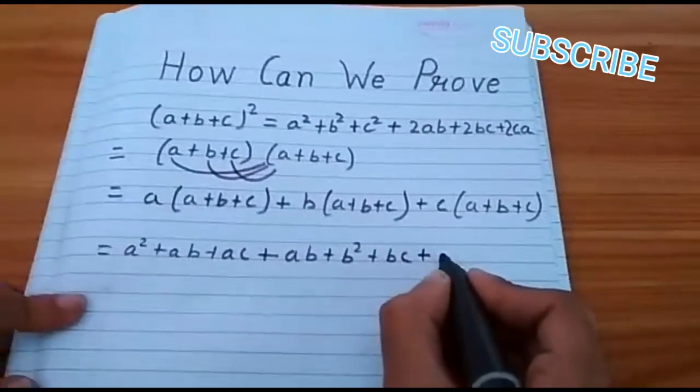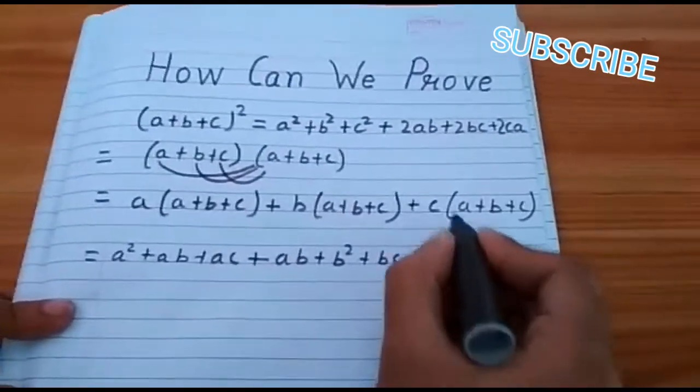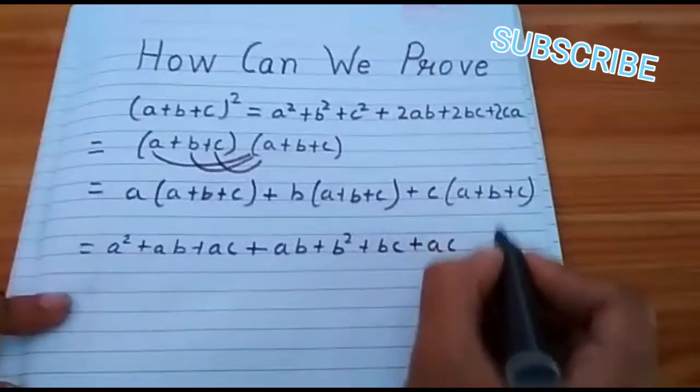Then b into b is equal to b². Then c into b. Then c into b equal to bc.